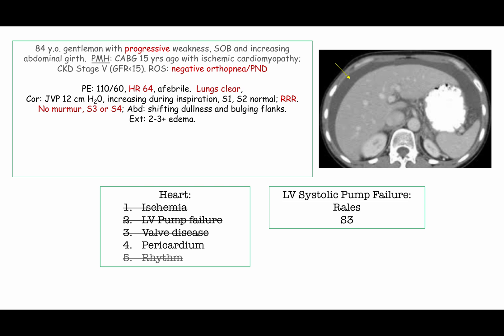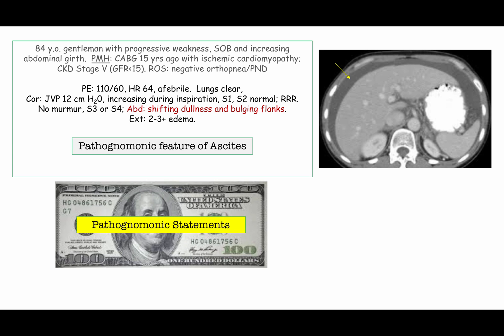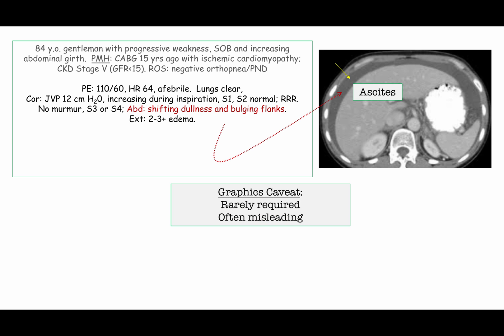I've also excluded active ischemia based on the progressive nature of the symptoms and the failure of the question writer to include anginal symptoms. Continuing to review the physical exam, shifting dullness and bulging flanks are described — that's a pathognomonic feature for ascites. Pathognomonic statements are money in the bank. You have been definitively told that this patient has ascites.